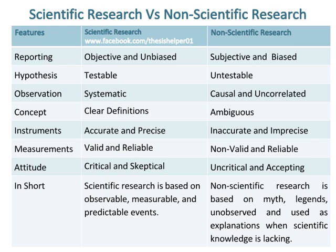In short, scientific research is based on observable, measurable, and predictable events, whereas non-scientific research is based on myth, legends, and unobserved explanations used when scientific knowledge is lacking.